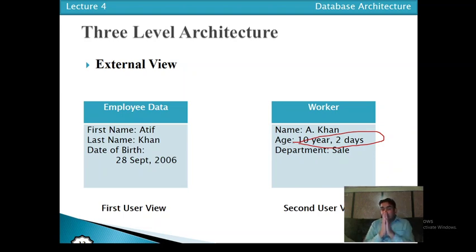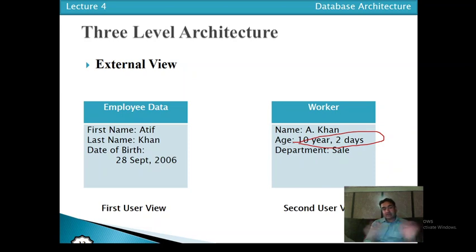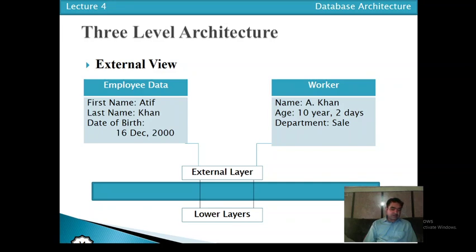This concept is called virtual calculated data. Virtual calculated data means the value of age is not stored in the database — only the date of birth value is stored, and age can be calculated from date of birth. Age is a derived attribute whose value can be calculated as the difference between date of birth and the current date, using timestamps. Similarly, from salary we can calculate annual salary, which is also virtual calculated data. At the external view, we may have virtual calculated data. An external view is a logical description of some portion of the database required by the user to perform a specific task.